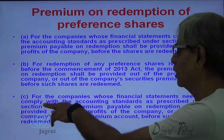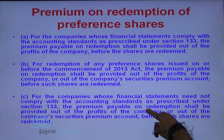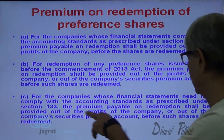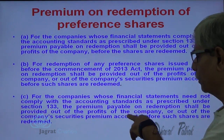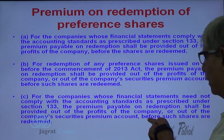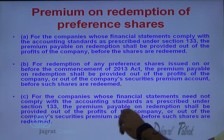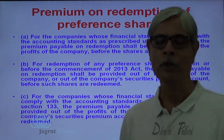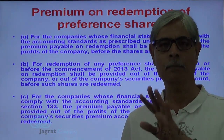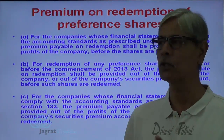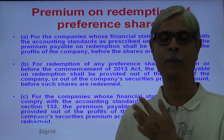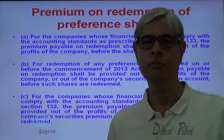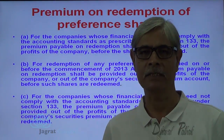Third important point: for companies whose financial statements need not comply with the accounting standards prescribed under Section 133, the premium payable on redemption shall be provided out of the profits of the company or out of the company's security premium account before such shares are redeemed. So if compliance of accounting standards is not required under Section 133, the preference share redemption premium could be written off either against profit and loss account or against security premium. These important observations are presented from the study material of CS students. Now let me start with the sum.